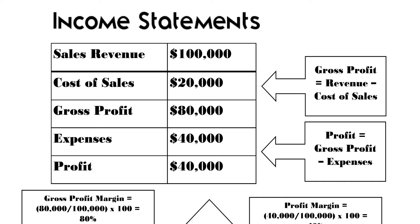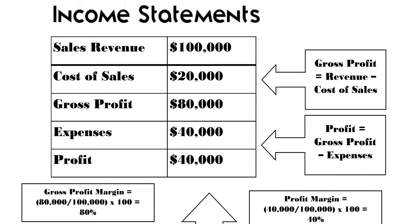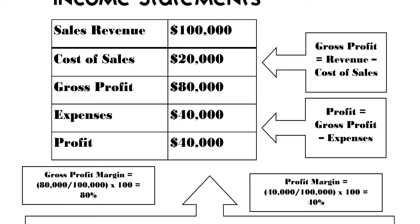If we want to work out the gross profit margin, we use that 80,000 and divide it by our sales revenue of 100,000 and times it by 100 to get 80%. Now 80% seems very high and we would like to compare it — maybe year on year, for example 2016 to 2017 — or compare it to the industry average or the nearest rival. But if we don't have that information, we can suggest that 80% is significant and it's a good figure.